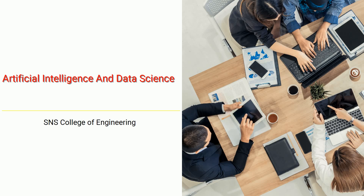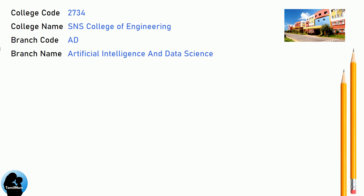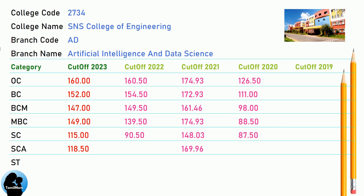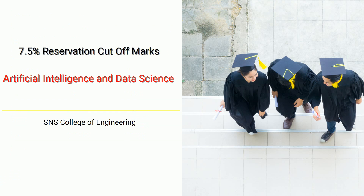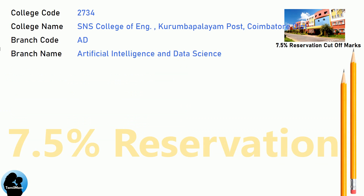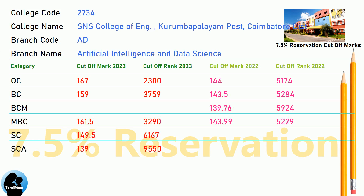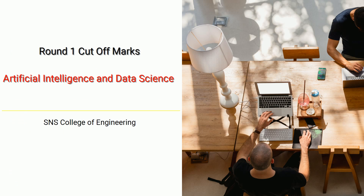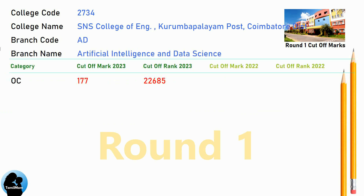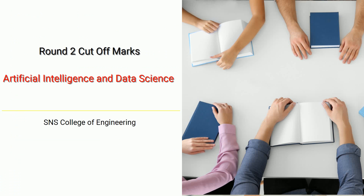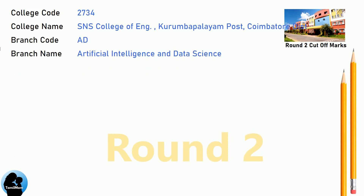DNA Cut-Off for ASNS College of Engineering in Artificial Intelligence and Data Science. DNA 7.5 Reservation Cut-Off for ASNS College of Engineering in Artificial Intelligence and Data Science. DNA Round 1 Cut-Off for ASNS College of Engineering in Artificial Intelligence and Data Science. DNA Round 2 Cut-Off for ASNS College of Engineering in Artificial Intelligence and Data Science.